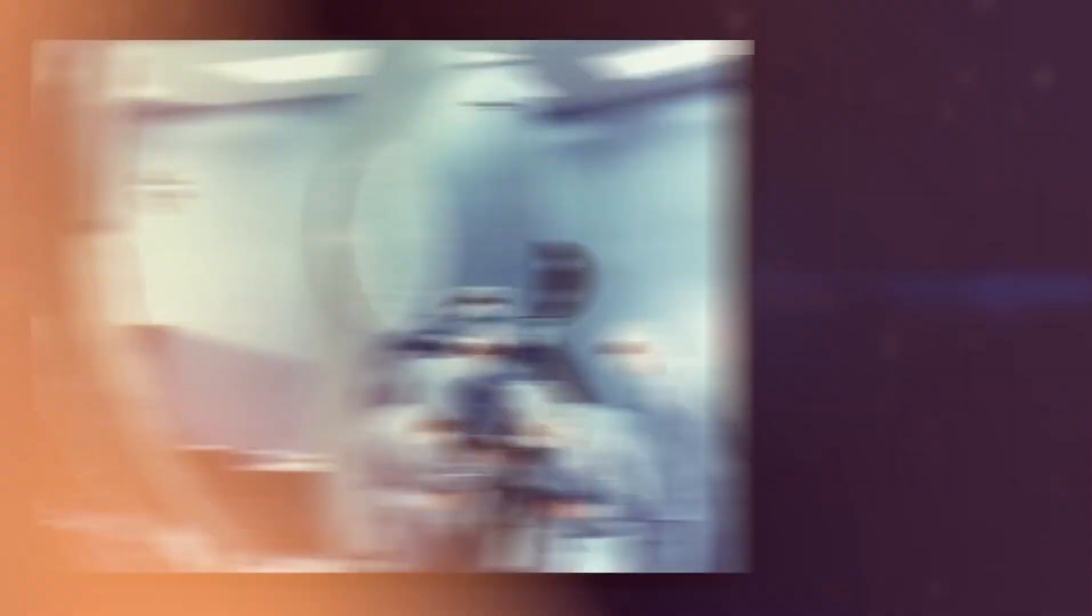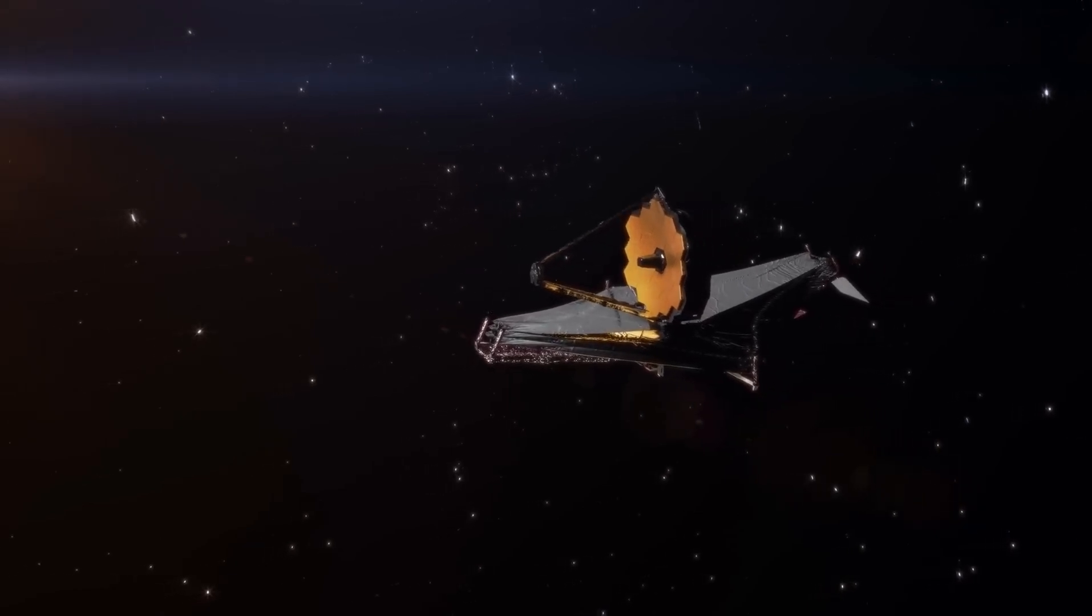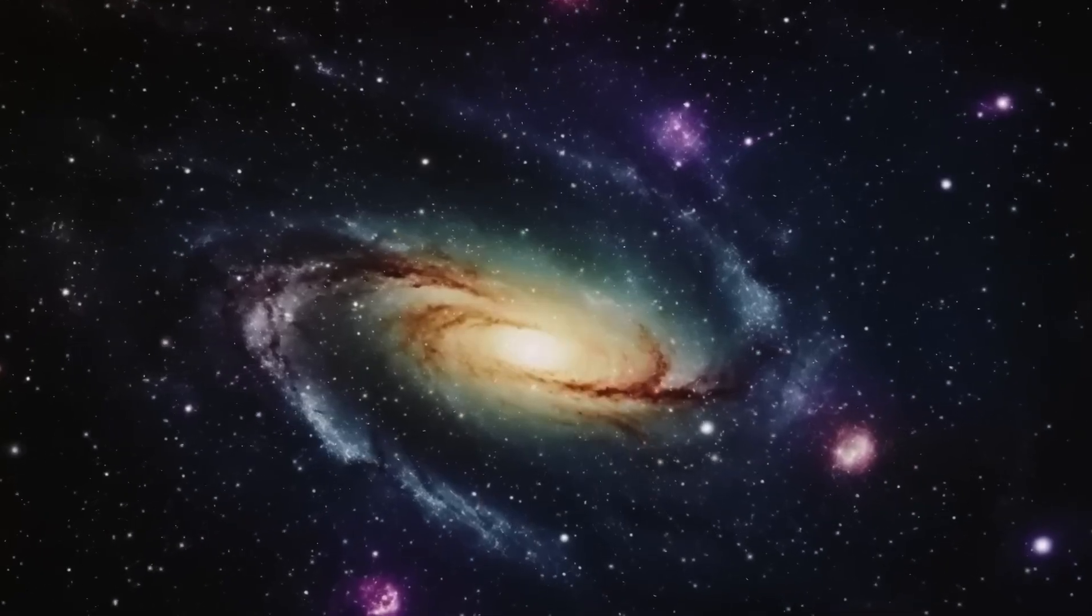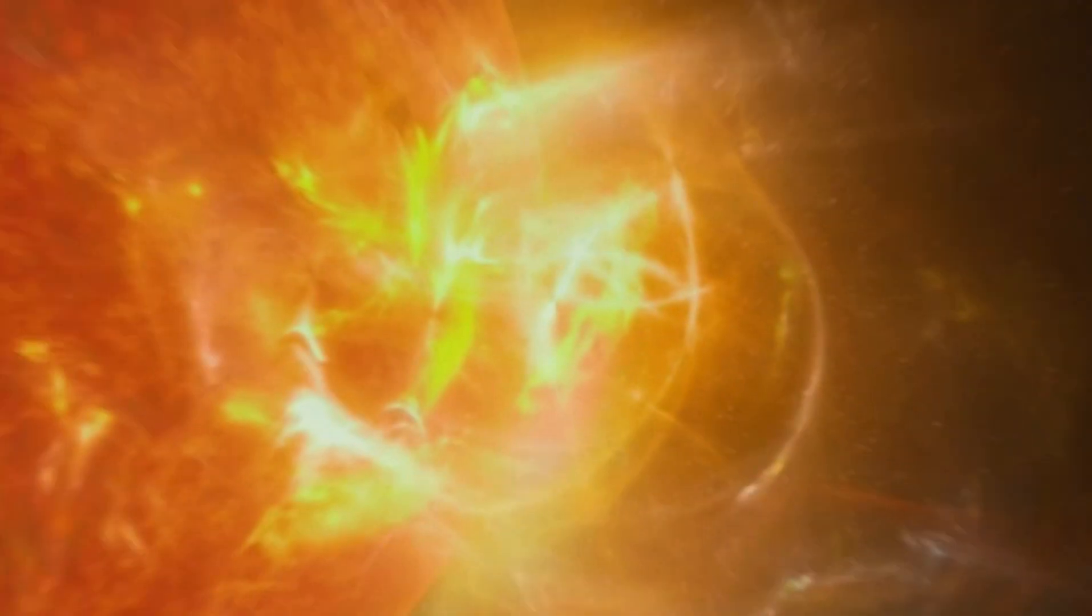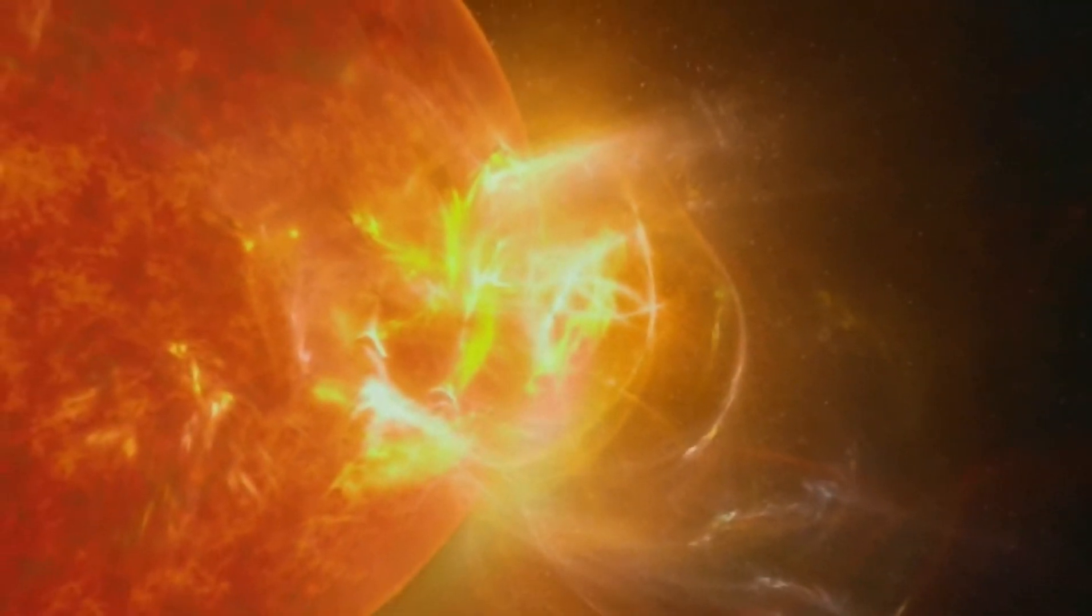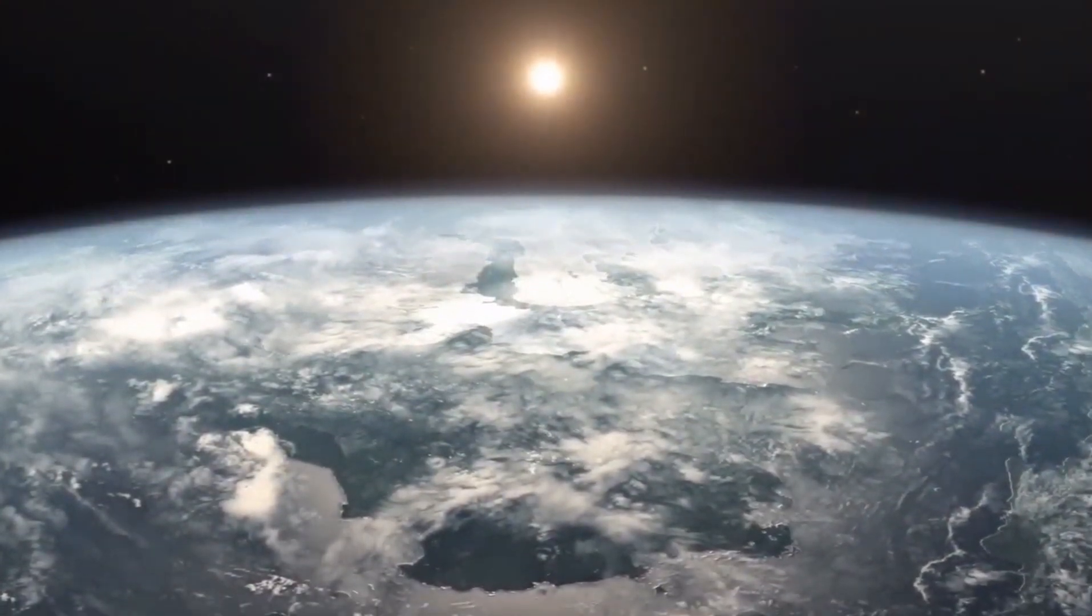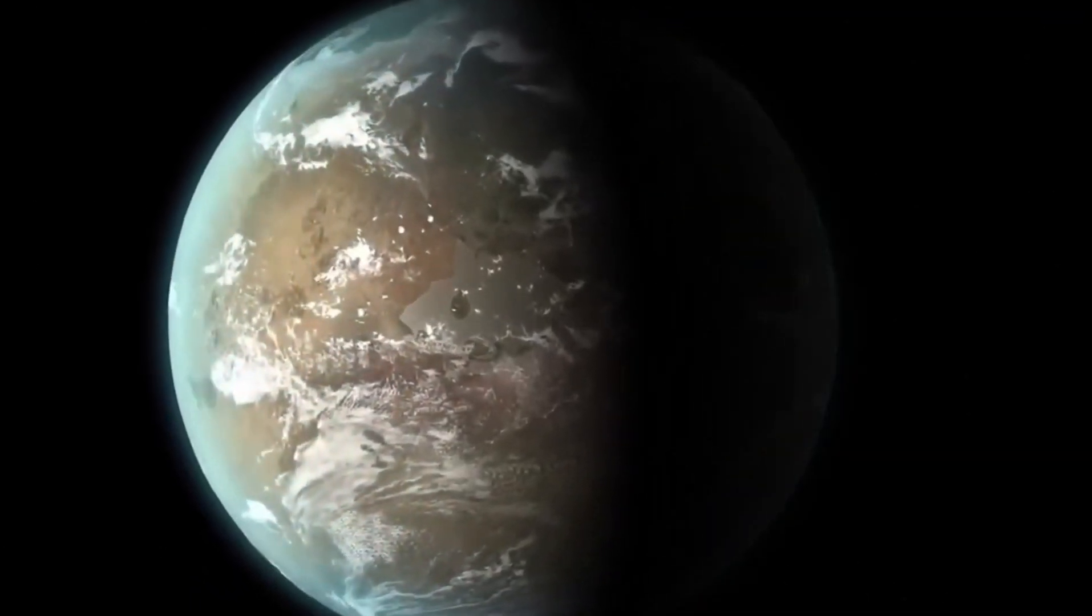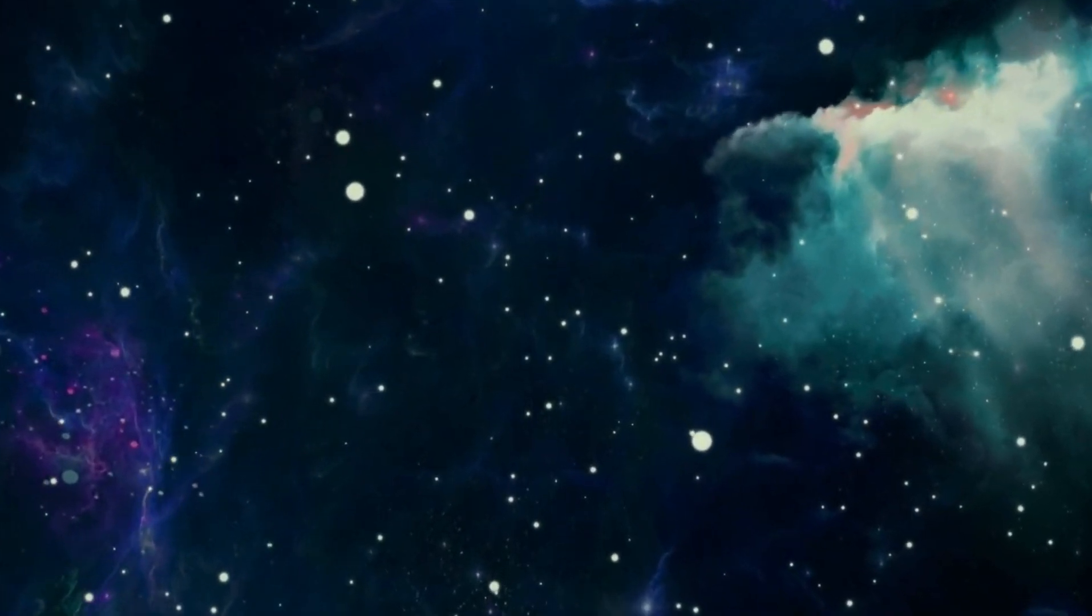In 2020, scientists guessed that Proxima Centauri b is about the same weight as Earth, but they're not exactly sure. They also aren't sure how big it is. It could be between 0.94 and 1.4 times the size of Earth. Depending on what it's made of, it might have a big core like Mercury or lots of water. We don't know how far the planet is from its star or how long it takes to go around it.